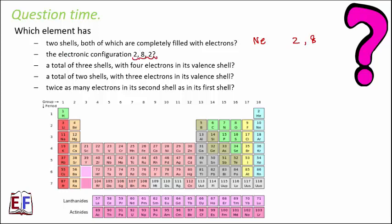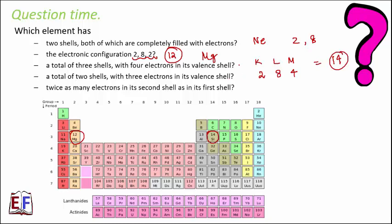Which element has electronic configuration 2, 8, 2? Summing up: 2 + 8 + 2 = 12, so the element with atomic number 12 is magnesium. Next: a total of 3 shells — K, L, M — with 4 electrons in its valence shell. K and L must be fully filled, giving 2 + 8 + 4 = 14. Atomic number 14 is silicon.